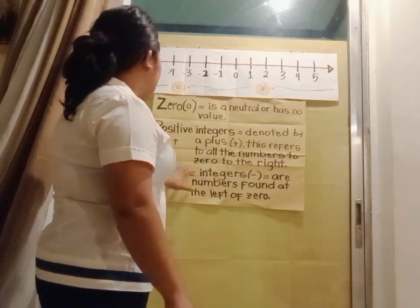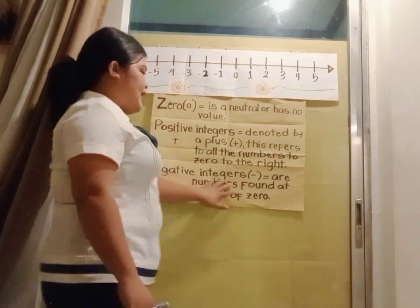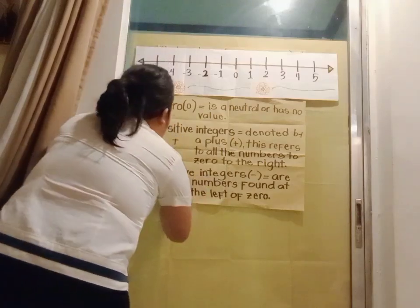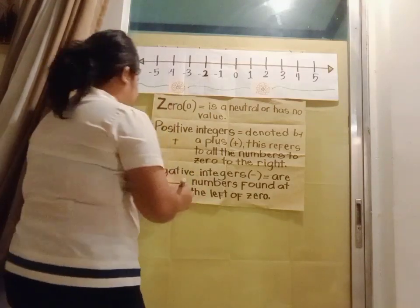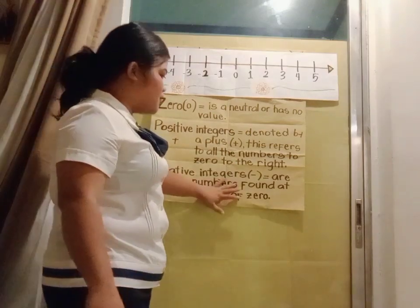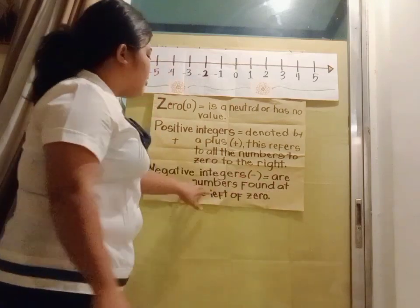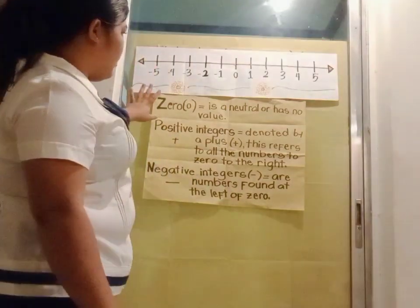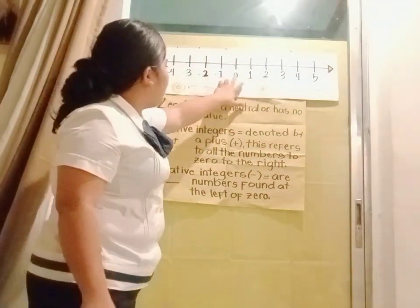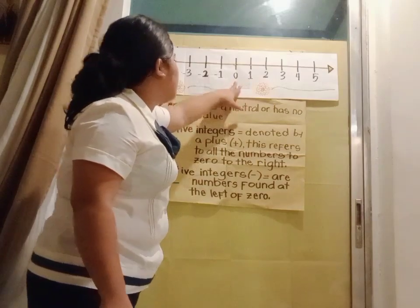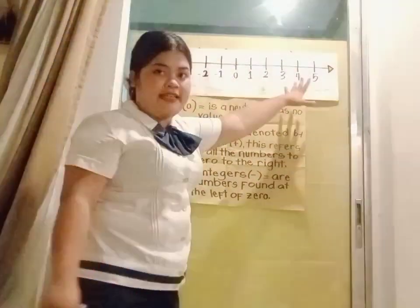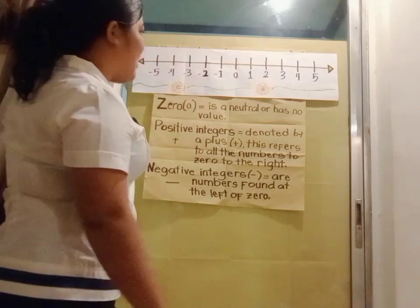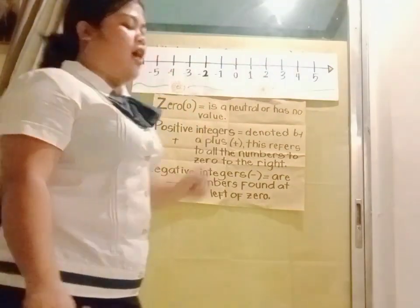The last part of the number line is negative integers. Negative integers are denoted by a negative sign. Negative integers are numbers found to the left of zero. So from our neutral number, which is zero — to the right are positive integers, to the left are negative integers. Everything to the left is negative and everything to the right is positive.